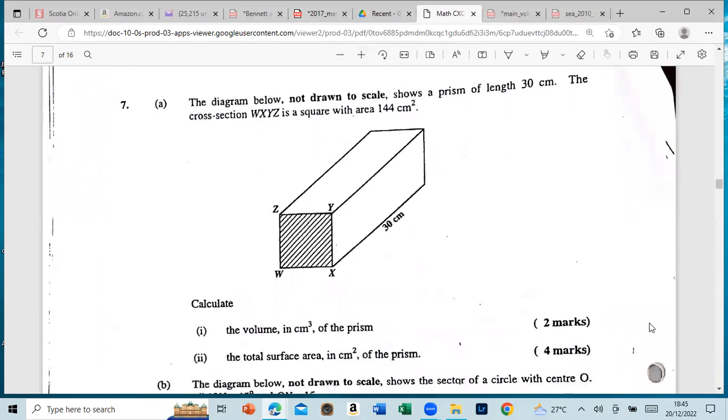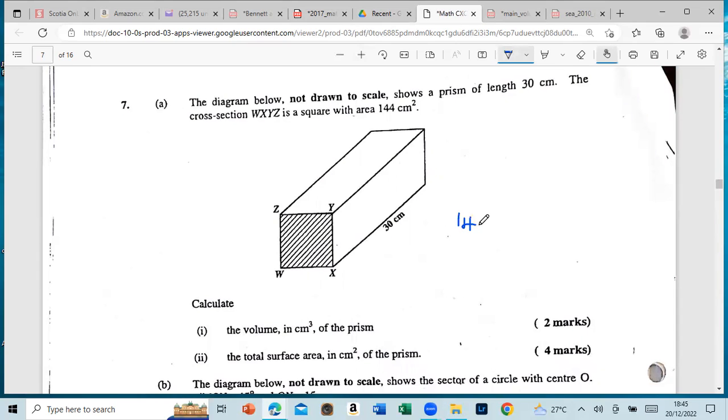For volume it's the area of the base times the height. They already worked it out for us nicely. So we know that the area is 144, so it would be 144 and then we multiply by 30. That should give us the value. So basically that would be the height, 30. So it's 144 times 30, which works out to 4,320.